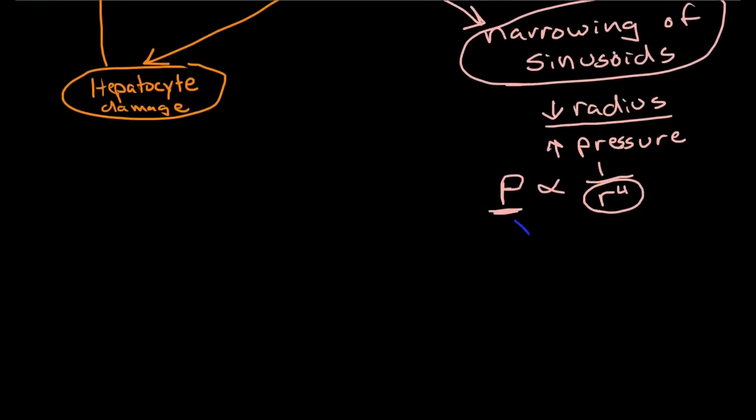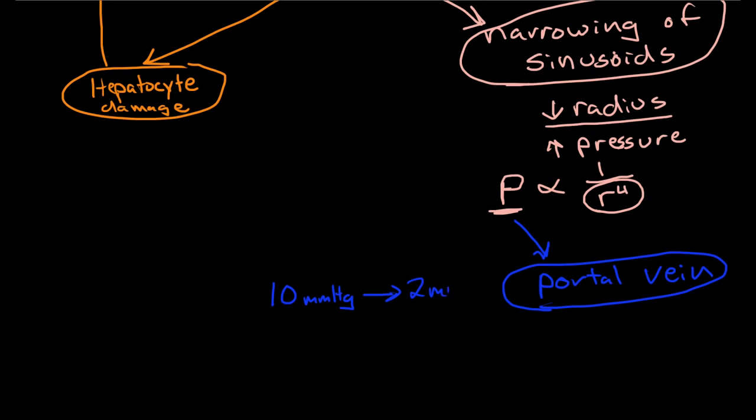And where is the pressure getting increased? Well, that increase in pressure is getting transferred back to the portal vein. Now remember, the portal vein is a low pressure system. It goes from, you know, 10 millimeters of mercury down to 2 millimeters of mercury or so in the inferior vena cava. Now, remember, the reason why it's so low here is because it's a vein that's already gone through a capillary bed.